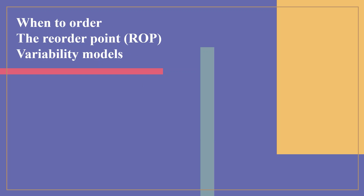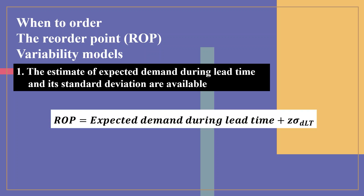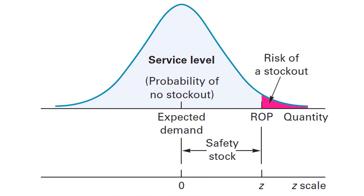Let us look at several models that can be used when variability is present. The first model can be used if an estimate of expected demand during lead time and its standard deviation are available. The formula is: ROP equals expected demand during lead time plus Z multiplied by sigma DLT, where Z is the number of standard deviations and sigma DLT is the standard deviation of lead time demand. These models generally assume that variability in demand rate or lead time can be described by a normal distribution. The value of Z depends on the stockout risk the manager is willing to accept — the smaller the acceptable risk, the greater the value of Z.